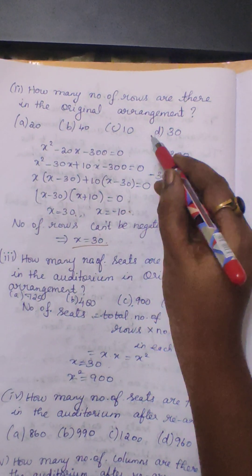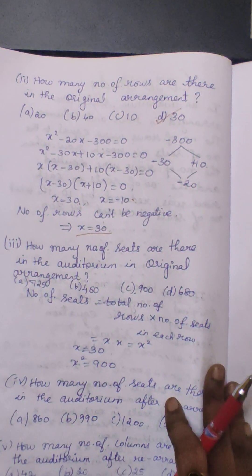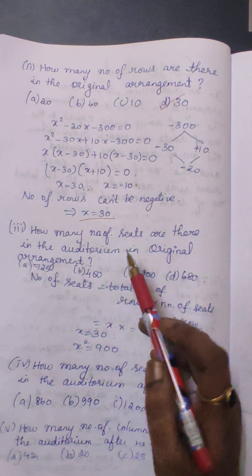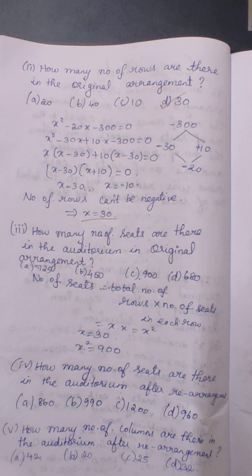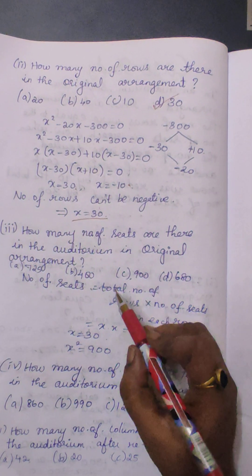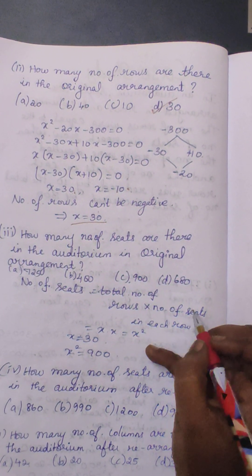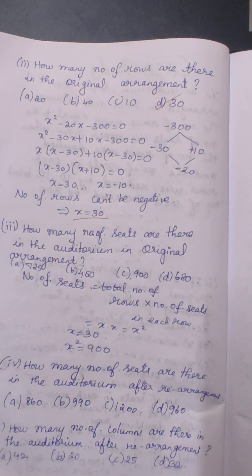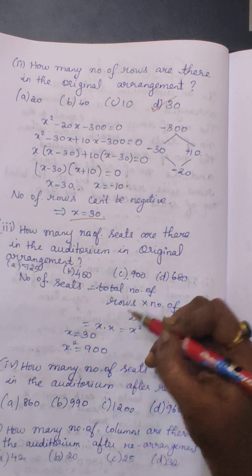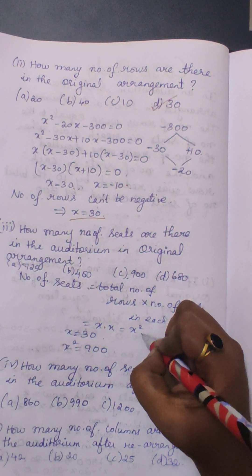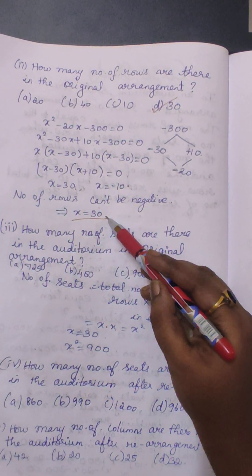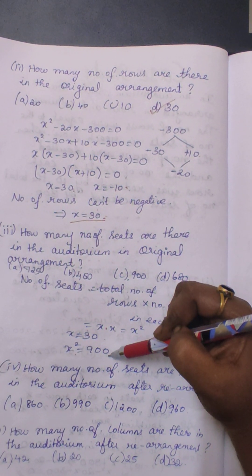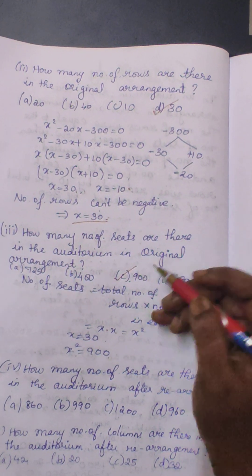Moving on to the third question: how many seats are there in the auditorium in the original arrangement? To find the total number of seats, we multiply the number of rows by the number of seats in each row, which is x squared. Since x equals 30, x squared equals 900. So there were 900 seats in the original arrangement.